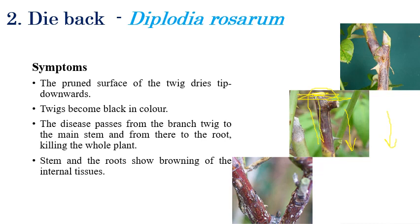Drying of the twig can be seen clearly. In later stages, the infection slowly spreads from twig to branches, from branches to stem, and to roots, and the entire plant gets infected and will die. Initially, from pruned parts, the twig dies and black color dieback can be clearly seen, slowly going downward from twig to branches to stem.